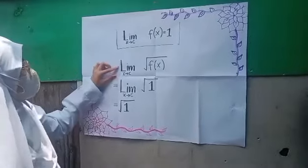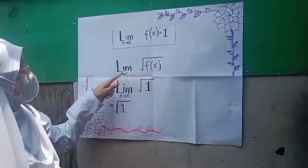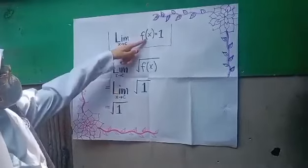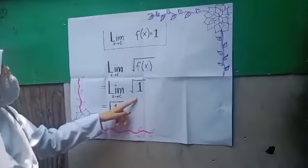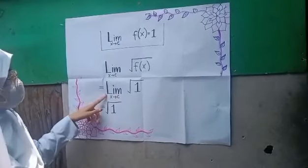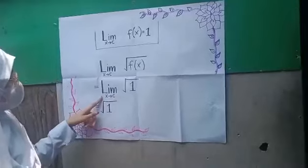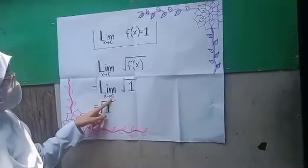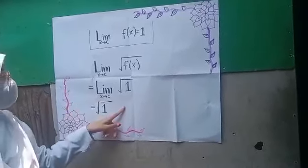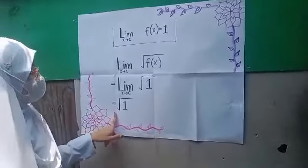So, our given is the limit of square root of f of x as x approaches to c. Since f of x is equal to 1, our given is going to become the limit of square root of 1 as x approaches to c. And we're just going to evaluate that — the answer is going to be square root of 1.